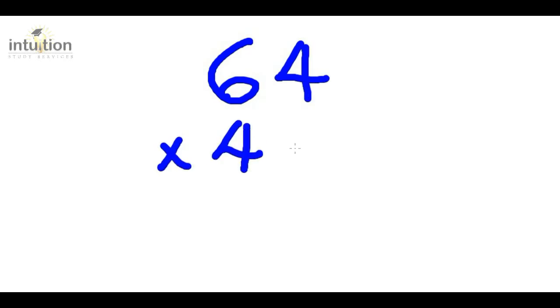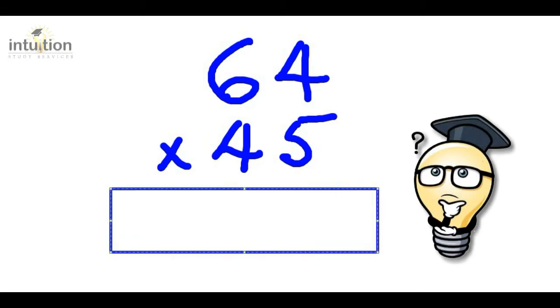Okay, so let's have a look at one more question, just so that we have fully, completely understood the DCD method. So let's consider this time 64 times 45. Give that one a go. Right. Did we get the answer? Okay, let's work through this together then.